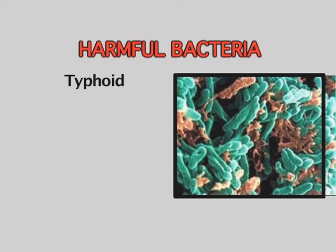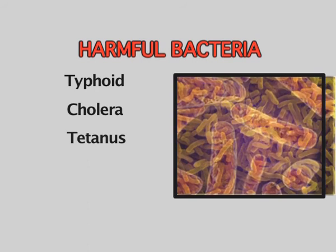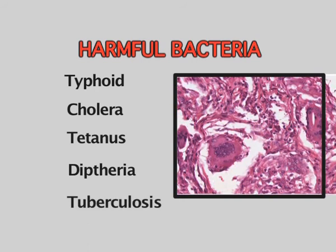We should not forget that many bacteria are harmful and can cause various diseases: typhoid caused by Salmonella typhi, cholera by Vibrio cholerae, tetanus, diphtheria, and tuberculosis — all caused by various bacteria. You can make a chart of the various diseases caused by bacteria, listing the causative agent, preventive measures, and control methods. This will help you keep bacteria away and stay free from disease. I hope by now you have understood the basic concepts of Kingdom Monera in detail.